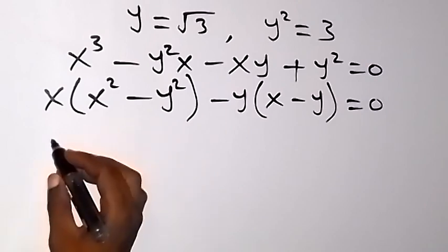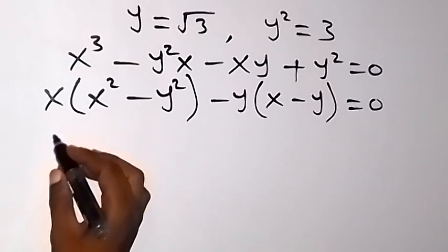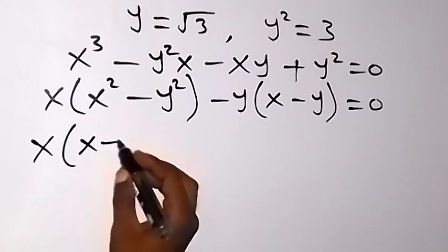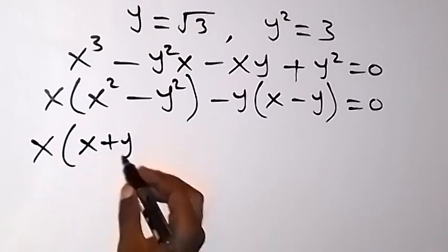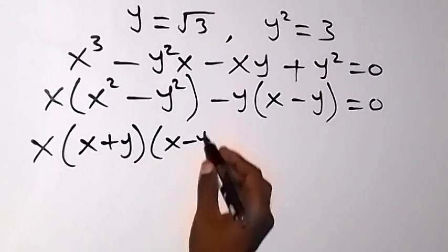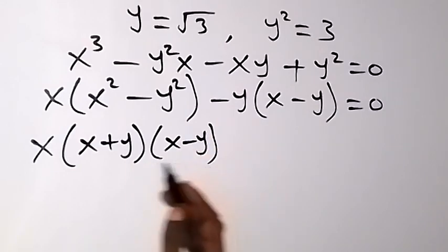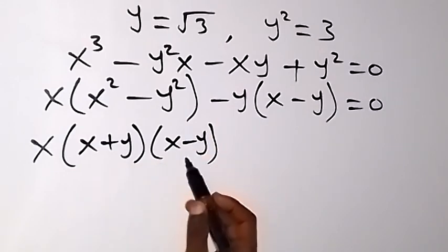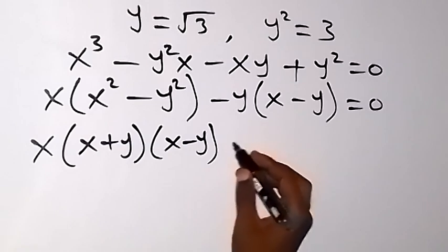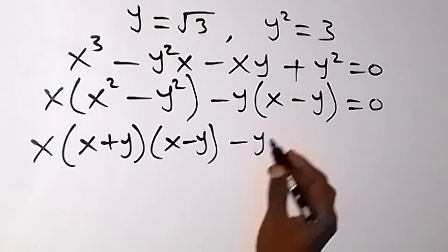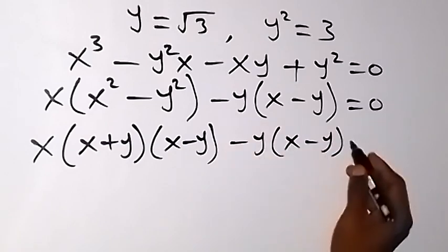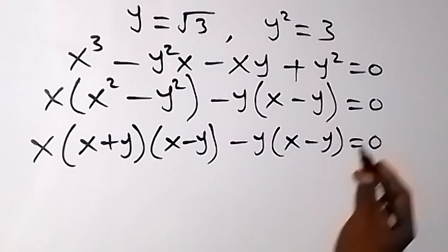Then this bracket is representing something of the form of difference of two squares, so we can write it in another way. This will be x into bracket (x plus y), then multiplied by (x minus y). So this is another way of writing this — difference of two squares — then minus y into bracket (x minus y), equals to 0.